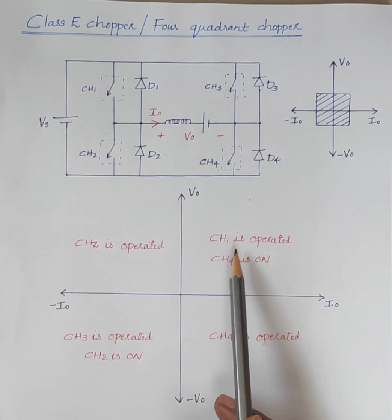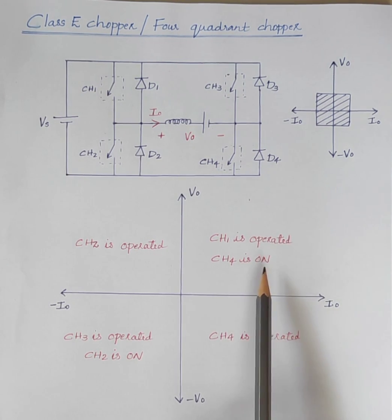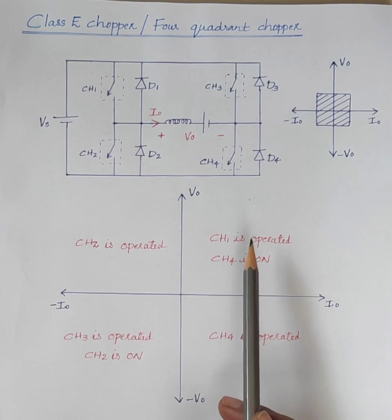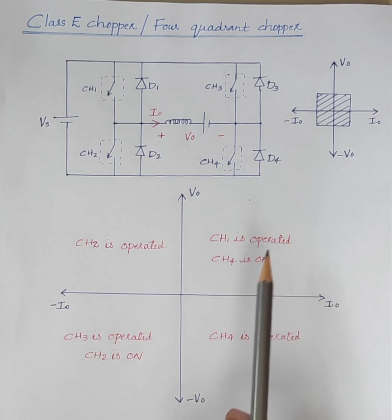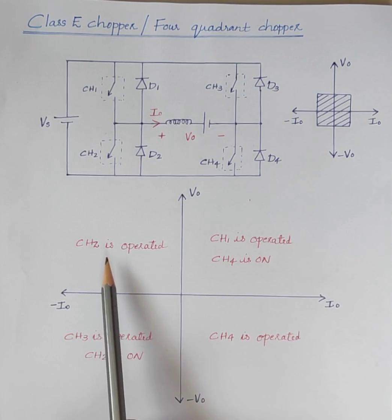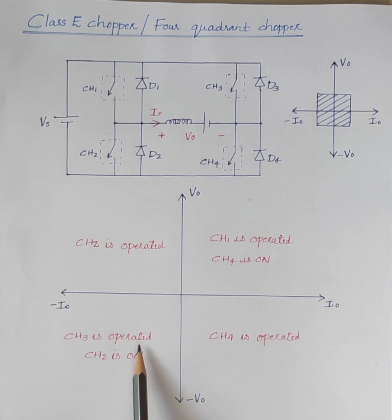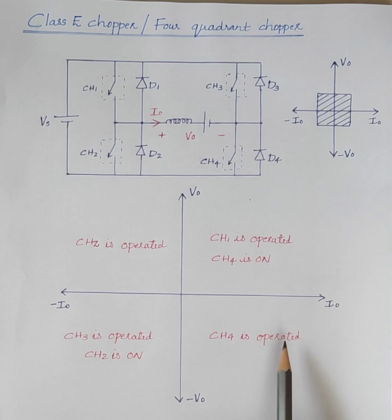In first quadrant operation, CH1 is operated and CH4 is always on. CH1 operated means we can make it either on or off. In second quadrant operation, CH2 is operated. In third quadrant operation, CH3 is operated and CH2 is always on. And in fourth quadrant operation, CH4 is operated.